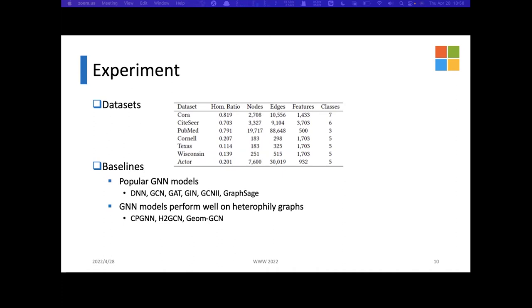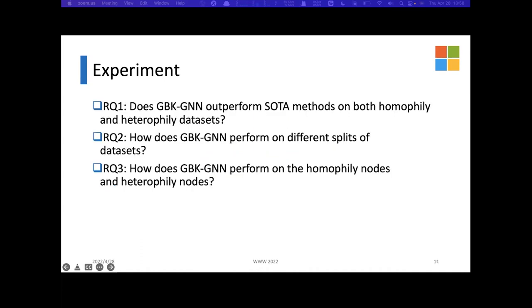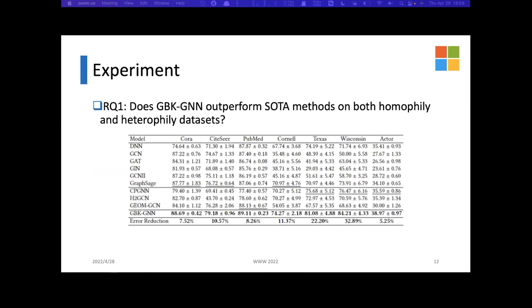We compare our GBK-GNN with three types of state-of-the-art methods which perform well on heterophilic graphs and six common GNN methods. Then I will present the results of our experiments and answer some research questions. The first is: does GBK-GNN outperform state-of-the-art methods on both homophilic and heterophilic datasets? The table shows the comparison of the mean classification accuracies of GBK-GNN with other popular GNN models including three types of recent state-of-the-art methods and six graph neural network-based methods. In general,